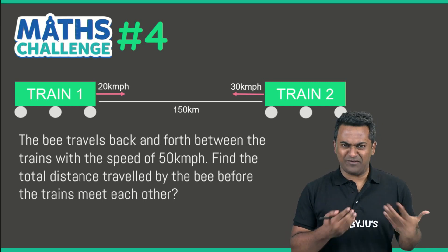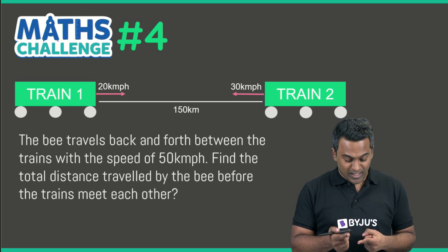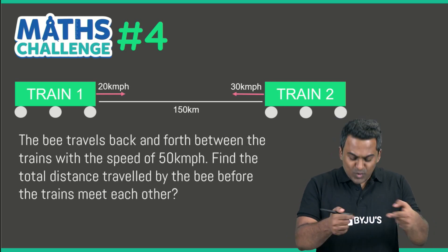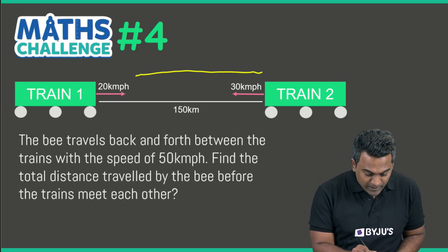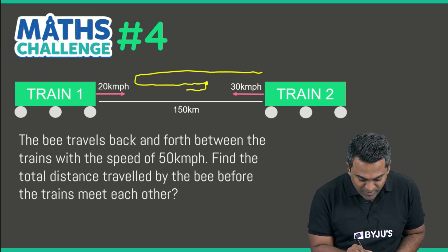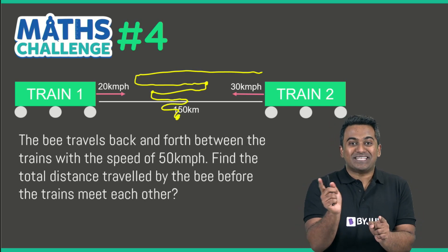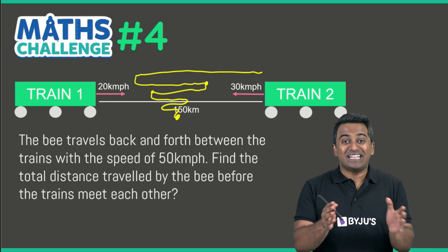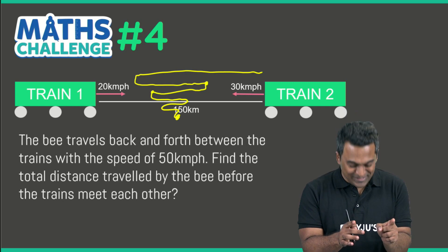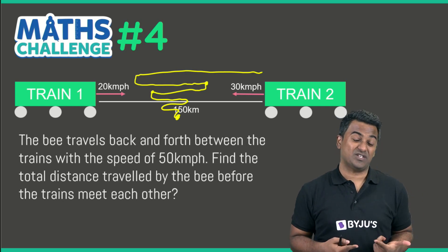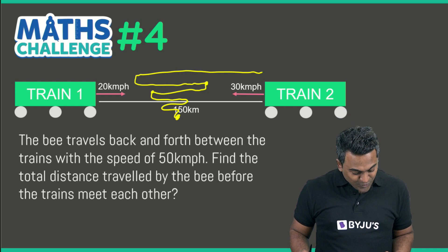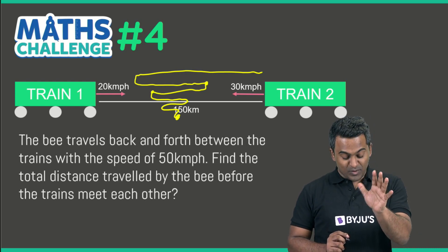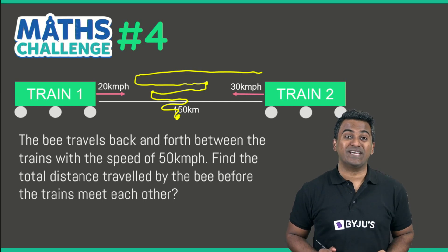The bee is playing a game — it travels back and forth between the trains. The moment the two trains start, the bee starts from one end, goes to meet the first train, goes back, meets the second train, goes back, and keeps doing this back-and-forth journey until the two trains collide. The speed of the bee is 50 kilometers per hour. We need to figure out the total distance traveled by the bee before the two trains meet.